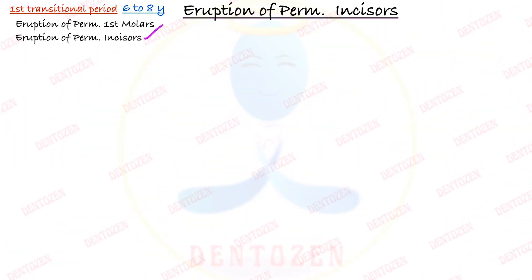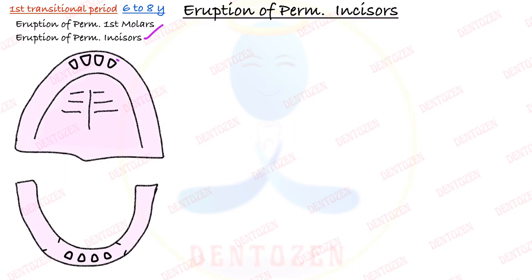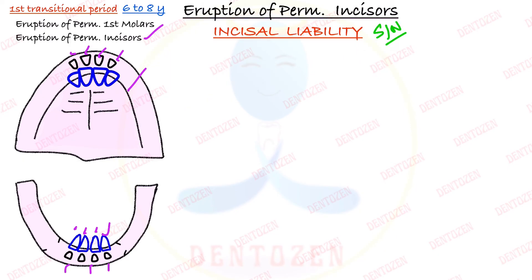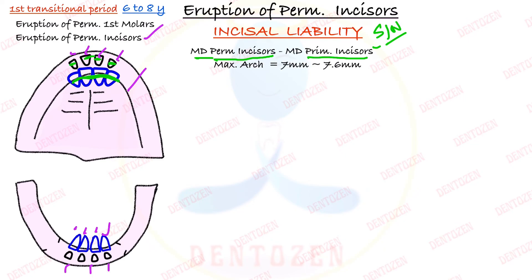Now let's talk about the second thing — eruption of permanent incisors in the early transitional period. Primary incisors are much smaller than the permanent incisors which will replace them. In the maxilla they come from the palatal side, in the mandible from the lingual side, so they require more space than is available. This extra space required by the incisors is known as incisal liability. How do we calculate it? It is the mesiodistal dimension of permanent incisors minus the mesiodistal dimension of primary incisors. In the maxilla it is 7 mm and in the mandible it is 5 mm.